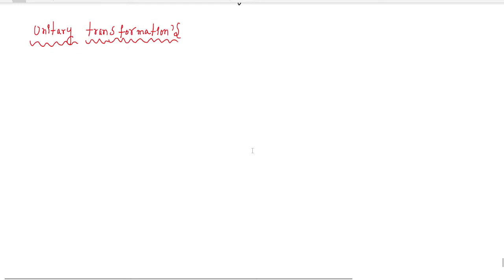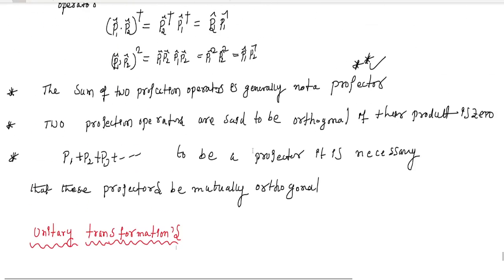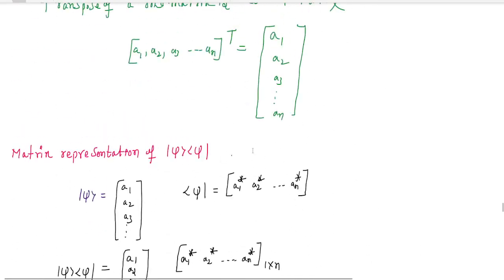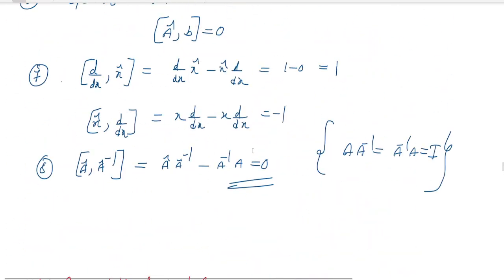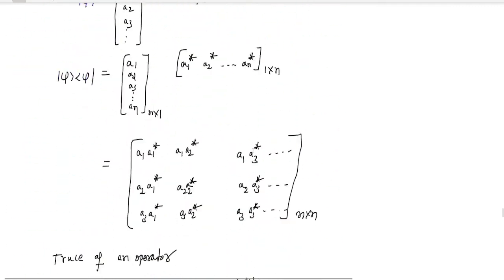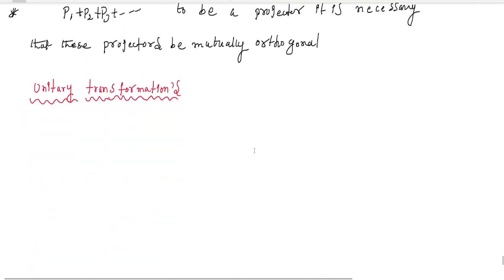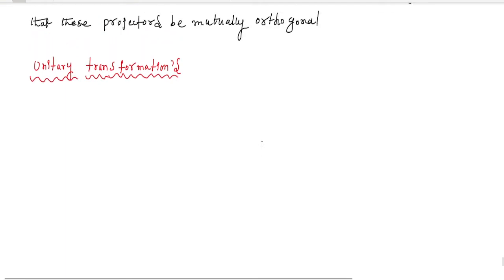This is the next topic in mathematical tools of quantum mechanics. We have been discussing operators: the unit operator, the projection operator, and Hermitian operator with its adjoint operators compared to algebra. We also discussed the eigenvalue equation.